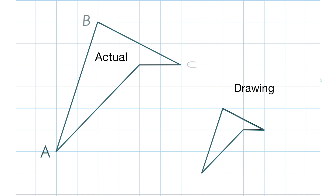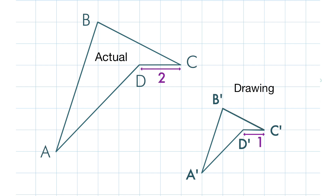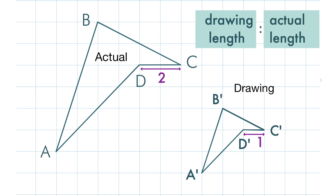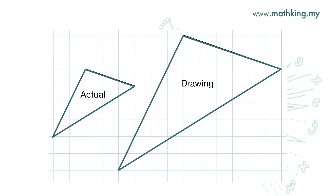If we name the object A, B, C, D, we usually name the drawing A prime, B prime, C prime, D prime. To find the scale, we only need to take the ratio of the length of the drawing to the length of the actual object. The easiest lengths to use are vertical and horizontal lines. The length here is two units and the length here is one unit. The number in front is the drawing length and the number at the back is the actual object length — drawing length is one unit and actual object length is two units, so the scale is one to two.